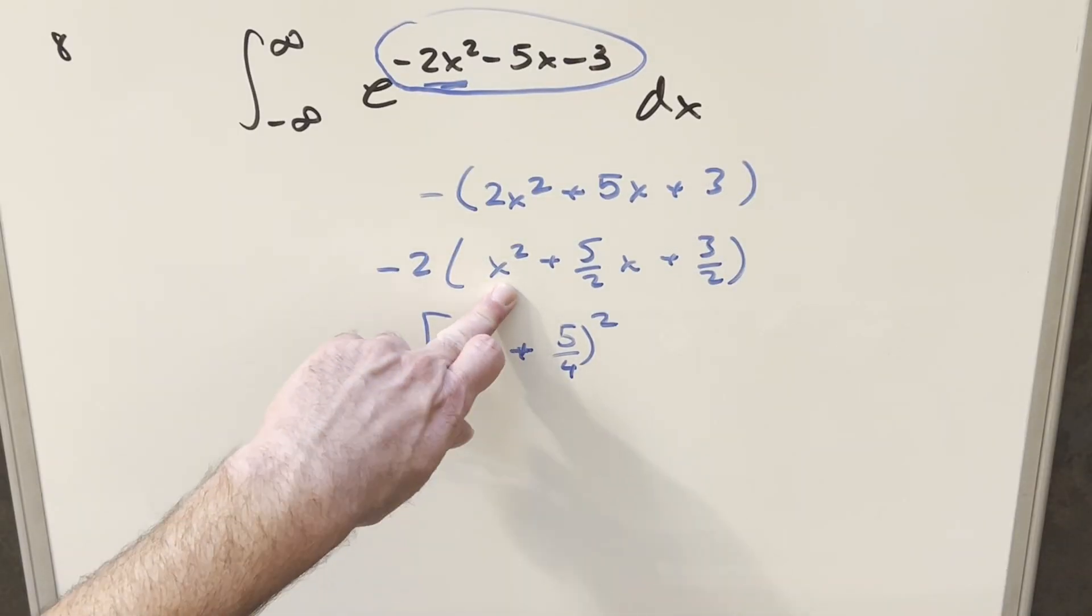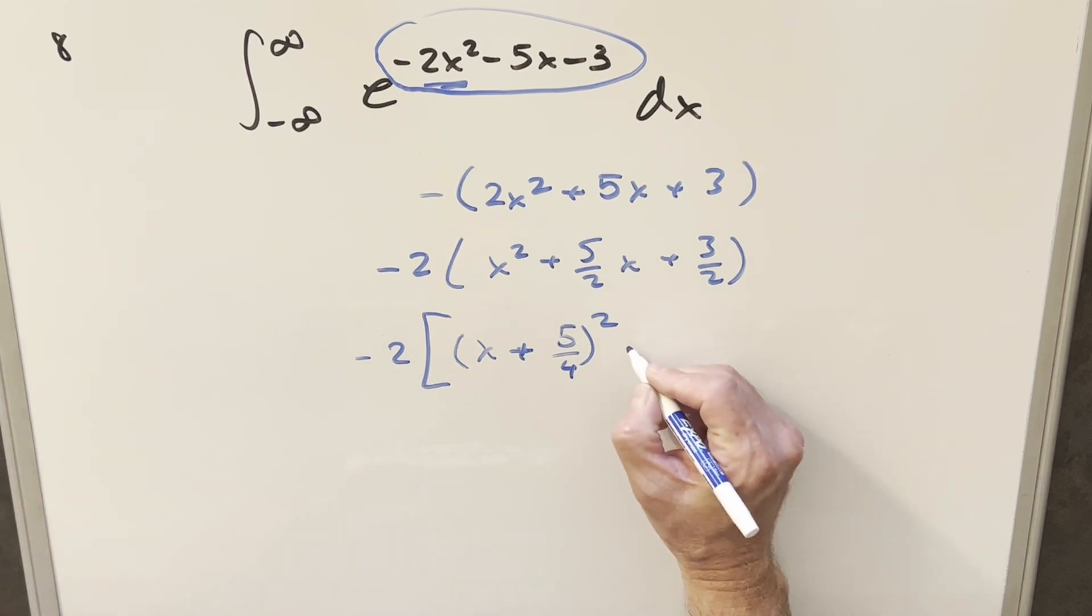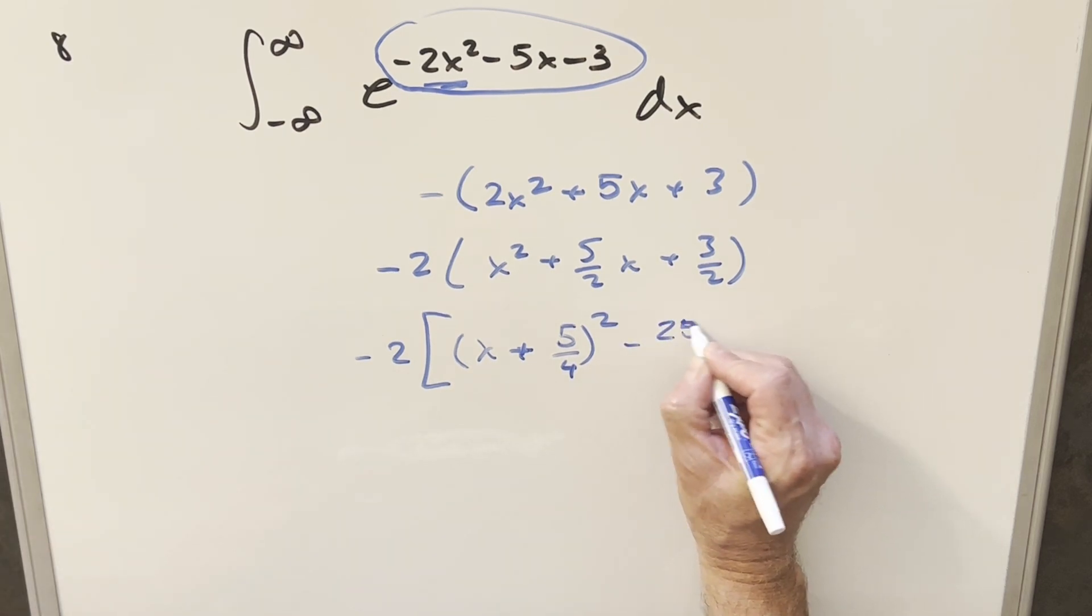Then multiplying it out, you're going to get these first two terms. Then for the last part, you square 5 fourths, you're going to get 25 over 16. So let's subtract that off, so I'm not changing it.